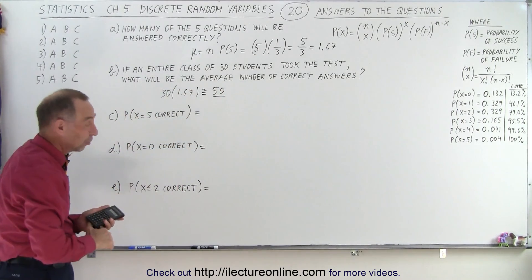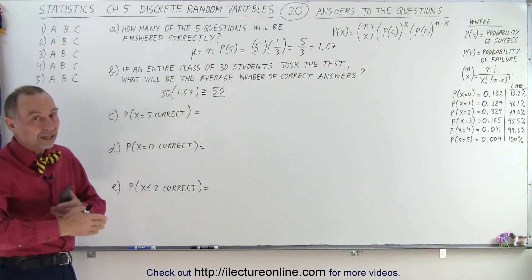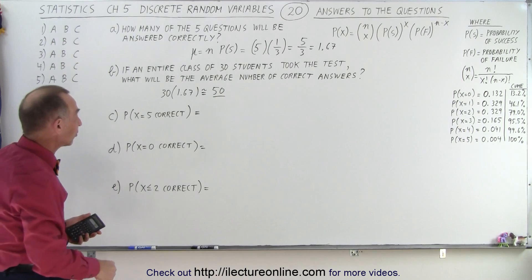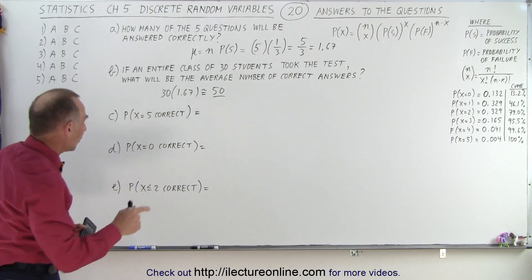About equal to 50 questions correct out of a class of 30. That would be the expected thing. So if you give a test like this, 5 questions, 3 possible answers, to 30 students, and at random they just fill in the blanks, you would end up with about 50 correct answers in total.